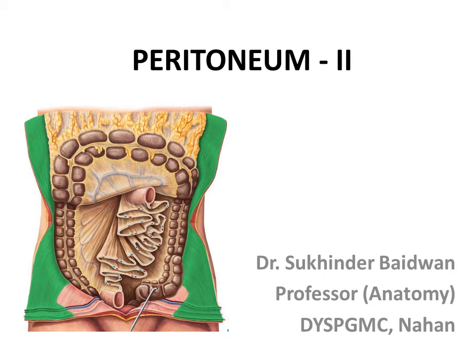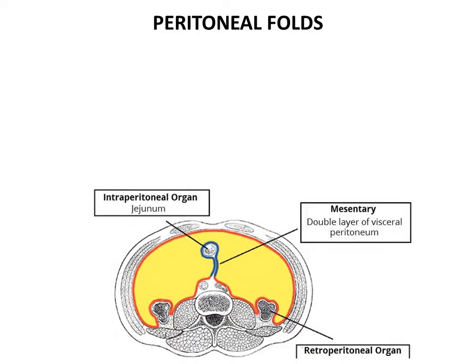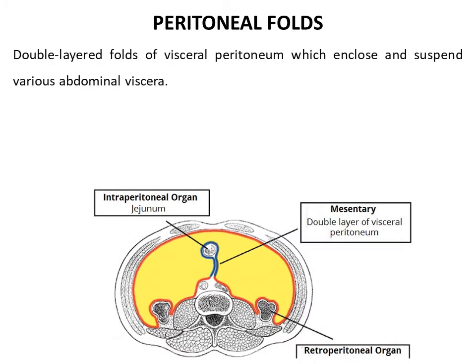The peritoneum is a closed sac made up of serous membrane which lines the abdominal cavity. It is invaginated by a number of viscera, hence subdivided into two layers: an outer parietal layer which lines the inner surface of the abdominal and pelvic cavity, and the inner visceral layer which lines the outer surface of the viscera. This visceral peritoneum forms double-layered folds which enclose and suspend the various abdominal viscera.